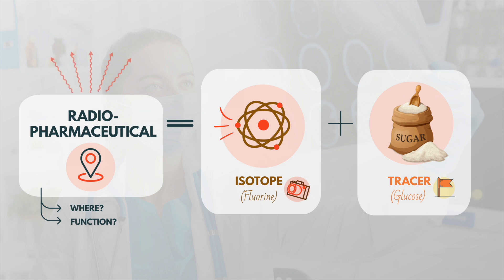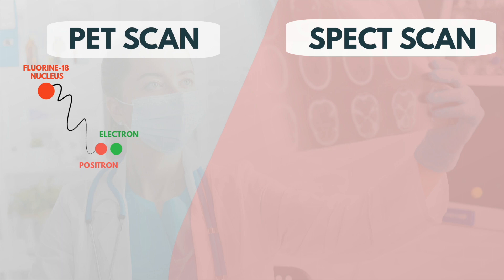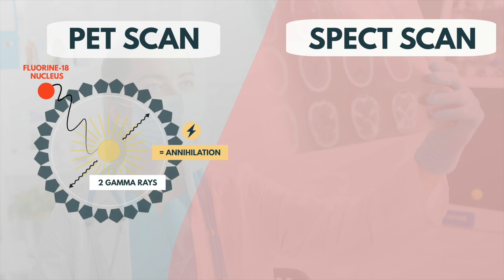Both SPECT and PET radiopharmaceuticals decay by emitting gamma rays, which are picked up by a special camera, but they both do it in a different way. Fluorine-18 produces small particles called positrons. When a positron encounters an electron, which happens very quickly in the body, both particles vanish in a burst of energy. This energy comes in the form of two gamma rays that travel in opposite directions and can be detected by the PET scanner. Only gamma rays that interact at the same time with a pair of detectors are recorded, and the trajectories trace back to the point of annihilation, allowing a computer to form an image.